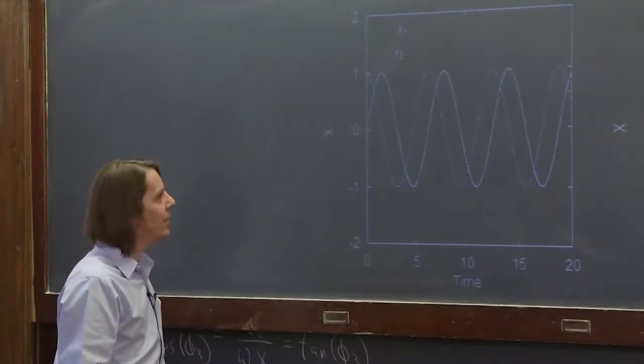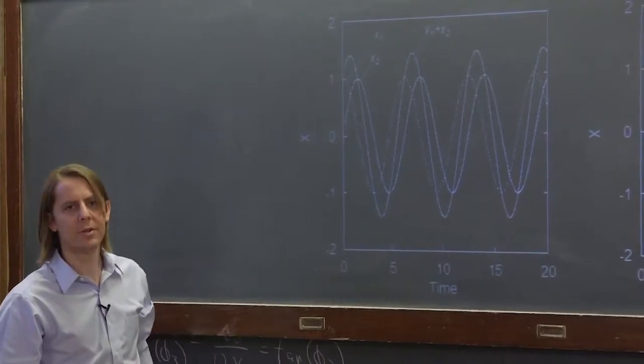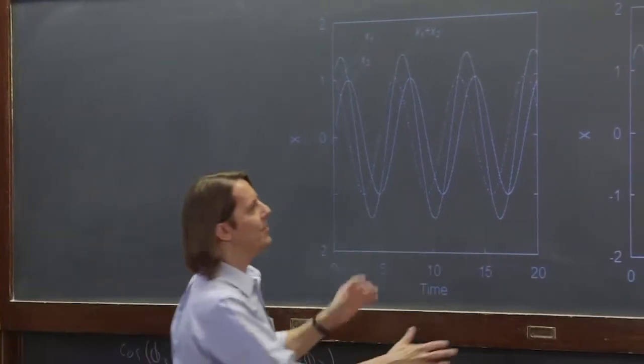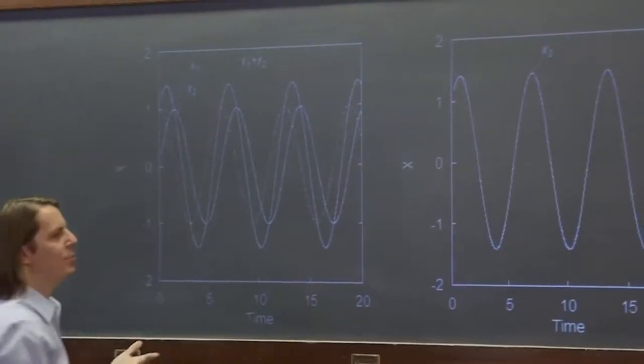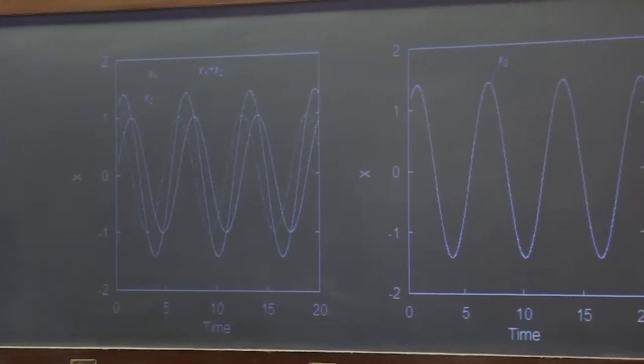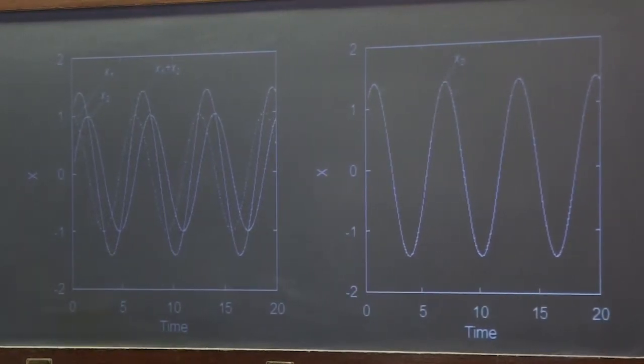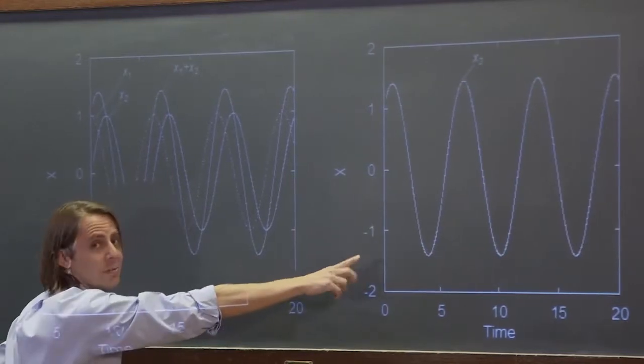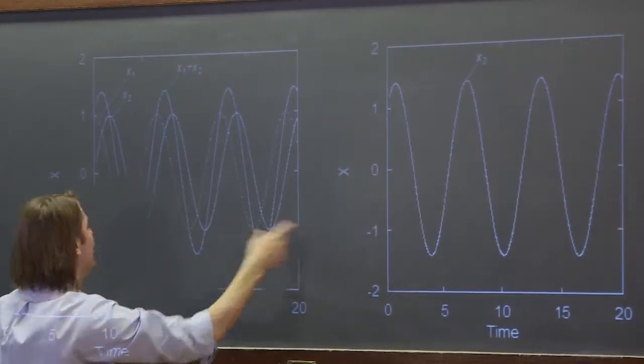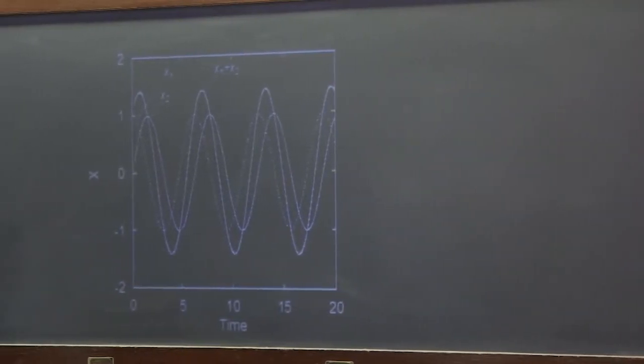But according to superposition, another thing that was a solution would have been x1 plus x2. And if you think about it, these should kind of be the same thing. Because x1 plus x2 would be what would happen if you would do those two initial conditions at the same time, give it an offset and give it a push. And sure enough, if we take our solution x3, this is the actual equation with all the inverse tangents in it, and we bring it over here with just the sum of x1 and x2, sure enough, they're the same thing.